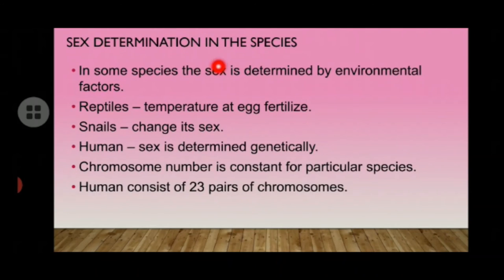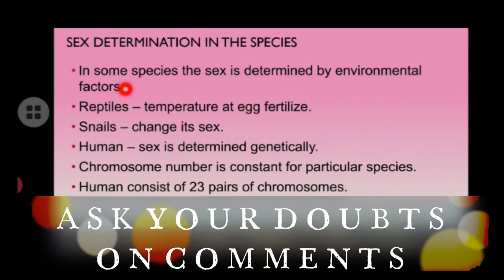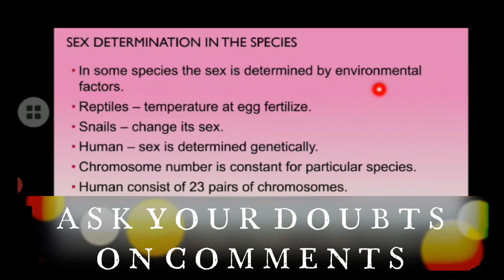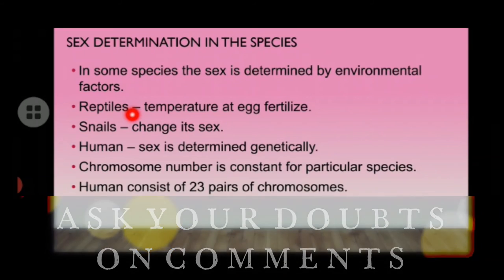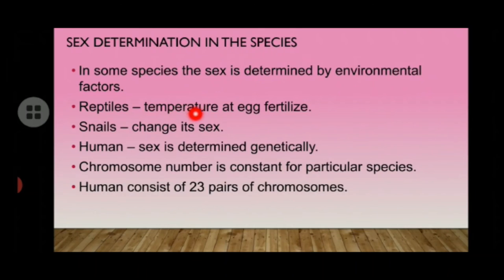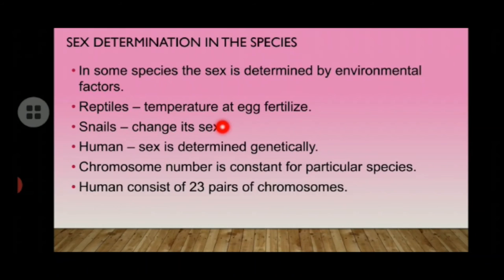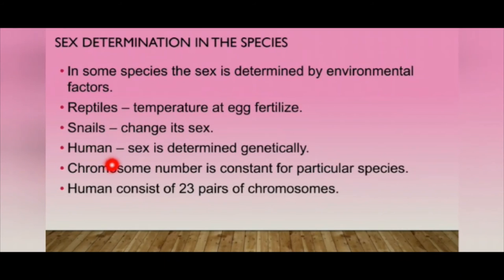Sex determination in species: How is sex determined? In some species, sex is determined by environmental factors. For example, in reptiles, the temperature at which the egg is fertilized decides whether it develops into a male or female. In snails, sex can even change. But in humans, sex is determined genetically — genes determine the sex of human beings.